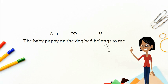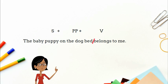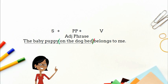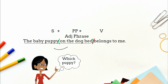Locate the verb belongs and place a dividing line to the left of it. Everything to the left of the dividing line is the complete subject. The prepositional phrase on the dog bed is an adjective phrase modifying the noun puppy, telling me which puppy.